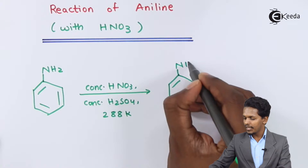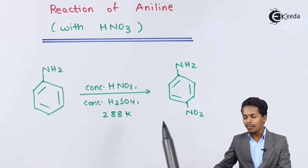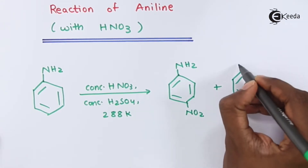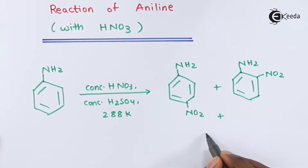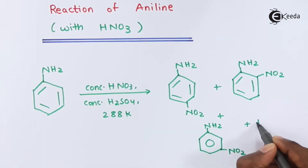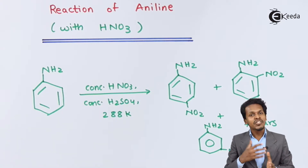The nitration process gives a mixture of compounds. One product is the para product where the NO2 group is attached at the para position, called para-nitroaniline. Another product has the NO2 group at the ortho position, called ortho-nitroaniline. We can also get meta-nitroaniline with the NO2 group at the meta position, along with other byproducts which are nothing but tars.